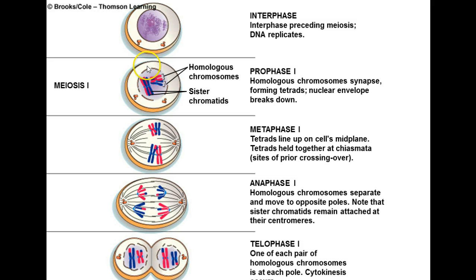We're going to have prophase 1, metaphase 1, anaphase 1, and telophase 1. All the way through this process — interphase through the first division through telophase 1 — these cells are diploid. They have homologous chromosomes in the same cell all the way through telophase 1.